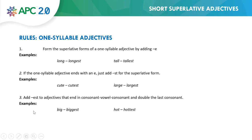Rule number three: we add -est to adjectives that end in consonant-vowel-consonant, and we double the last consonant. For example, the word 'beach' follows consonant-vowel-consonant — we double the consonant and add -est. The same applies to hot → hottest.